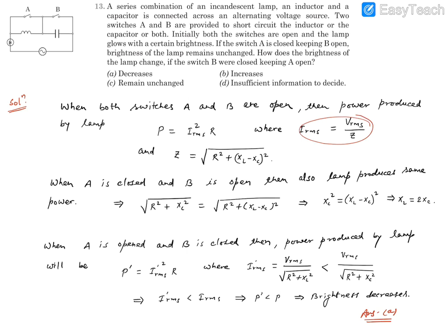IRMS equals VRMS by Z. VRMS is the voltage of the source which is not changing. That requires Z should not change. So in RC circuit, Z is given by square root of R squared plus XC squared. Earlier it was square root of R squared plus (XL minus XC) squared. And they should be identical because net impedance is not changing, which is giving the same current and the same power.